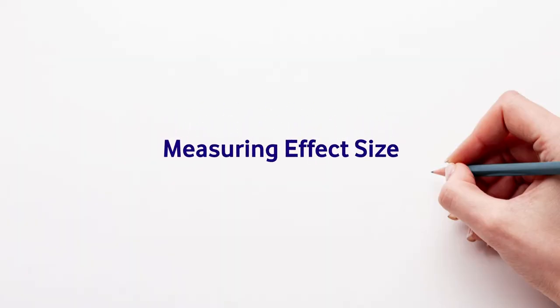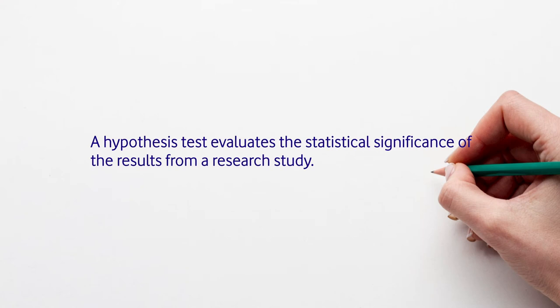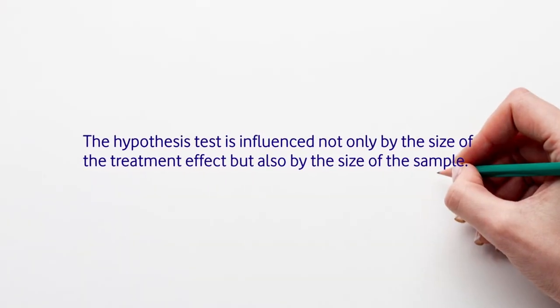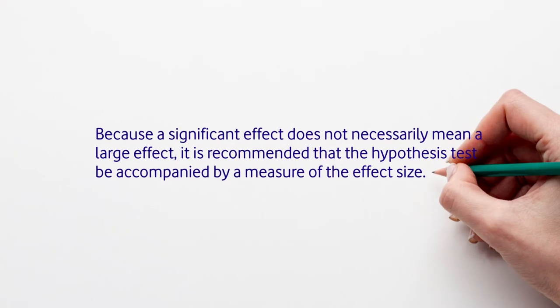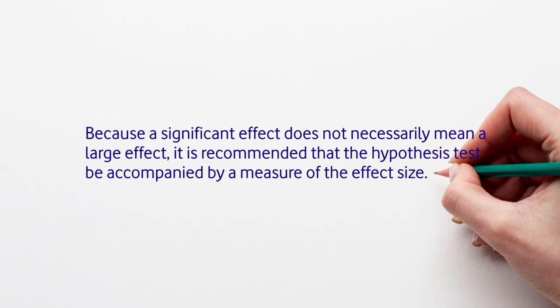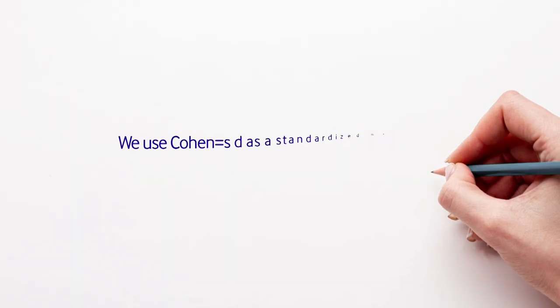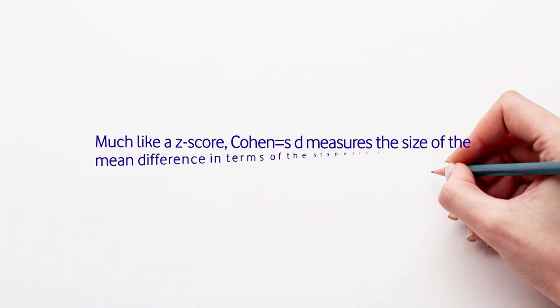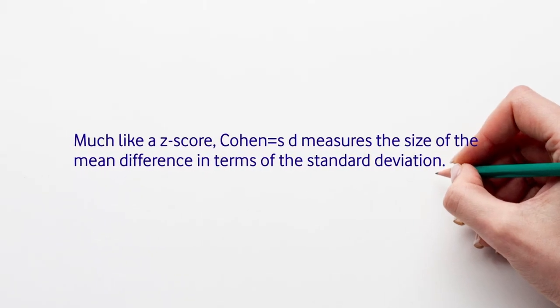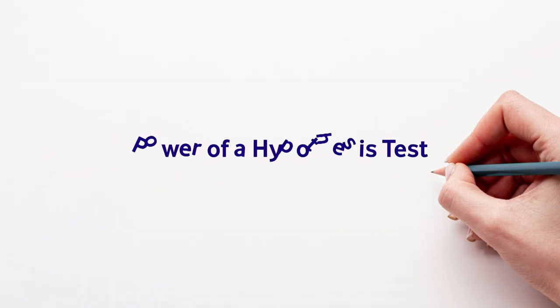Hypothesis tests evaluate the statistical significance of results by determining whether a sample mean occurred without any contribution from a treatment effect. The test is influenced not only by the size of the treatment effect but also by the sample size — even a very small effect can be significant in a very large sample. Because statistical significance does not necessarily mean a large effect, it is recommended that hypothesis tests be accompanied by a measure of effect size using Cohen's d, which measures the mean difference in terms of standard deviation.